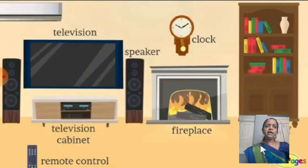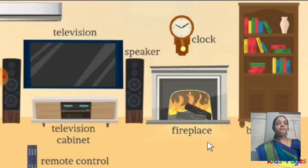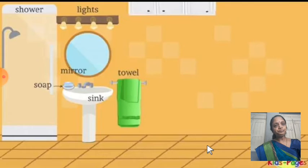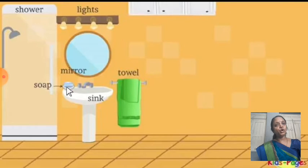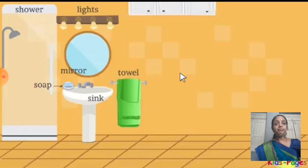You can find out more things, children, which are at your home. Here: shower, mirror, lights, soap, sink, towel. All these are also things. Many things you can see, so you can note down many more examples.